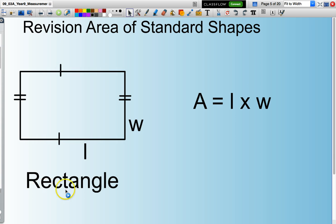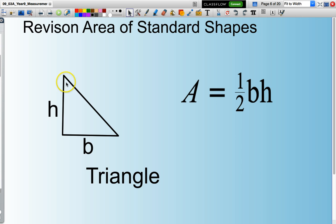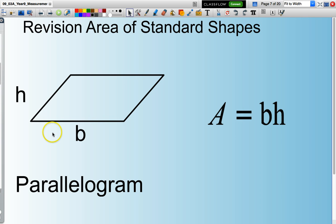The area of a rectangle is the length multiplied by the width. The area of a triangle is one-half the length of the base multiplied by the height. The area of a parallelogram is the length of the base multiplied by the height.